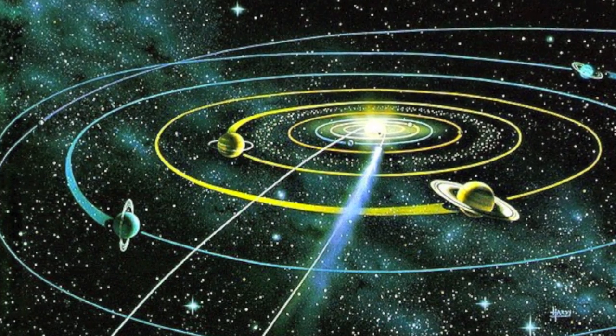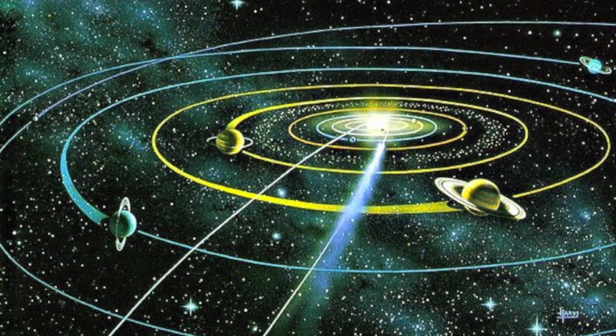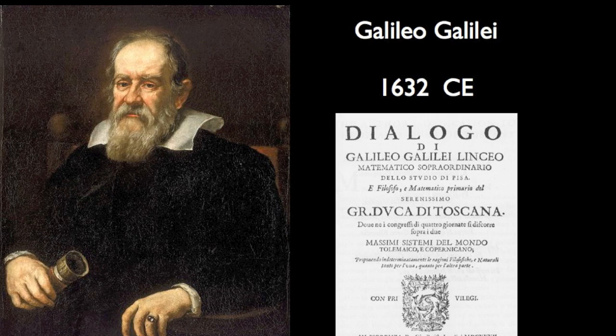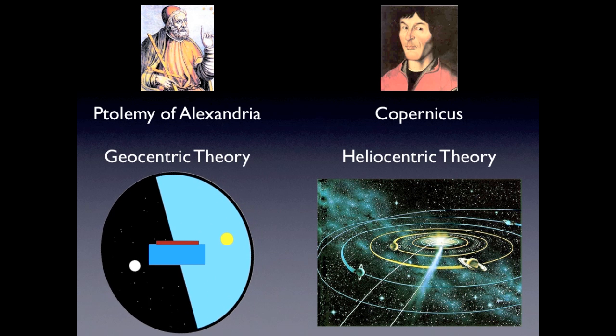Copernican ideas of heliocentric theory were picked up by Galileo in the next century. Galileo published his work in 1632 called Dialogue Concerning the Two Chief World Systems. It was a comparative analysis of geocentrism versus Copernican heliocentrism.